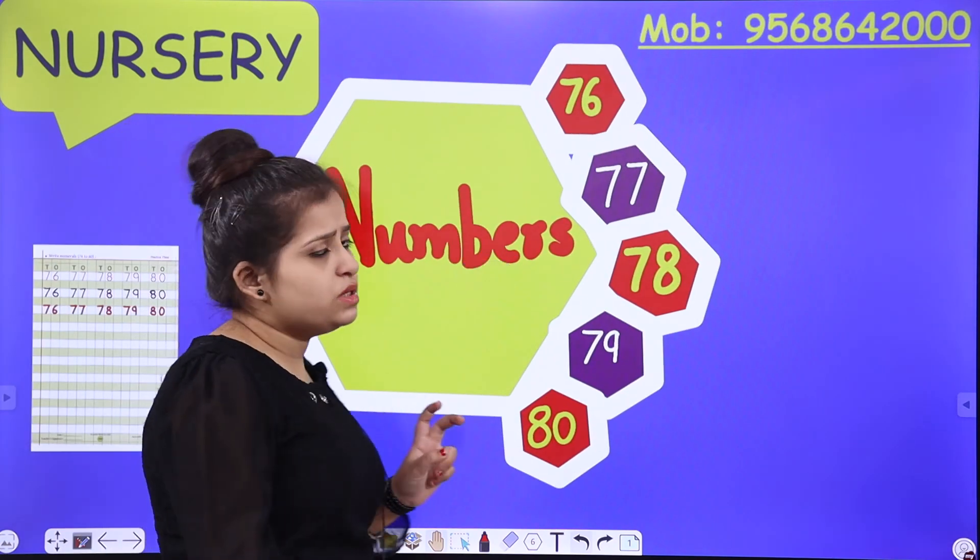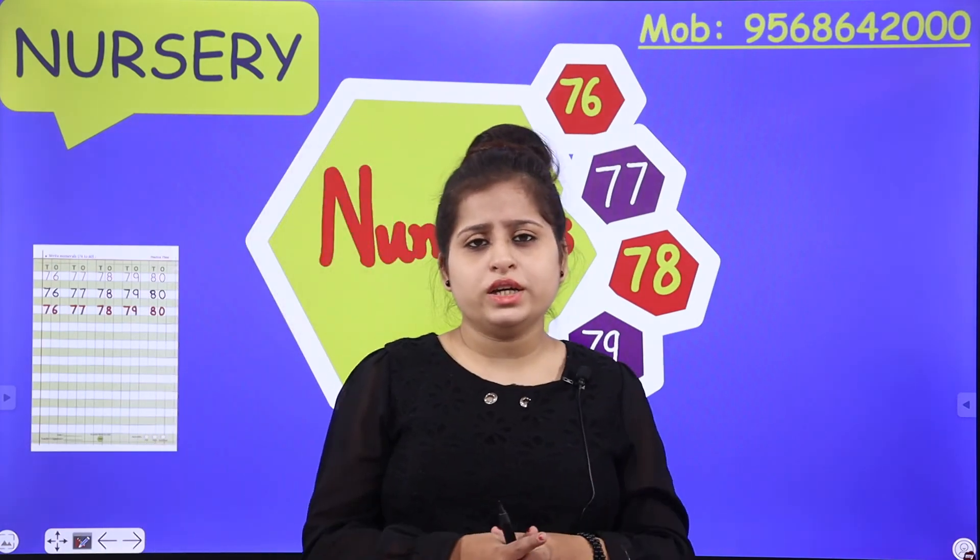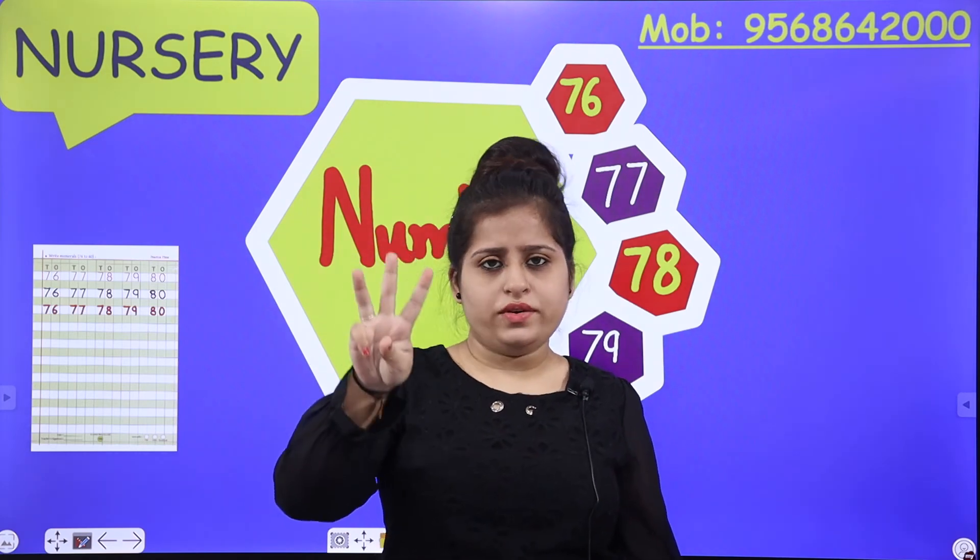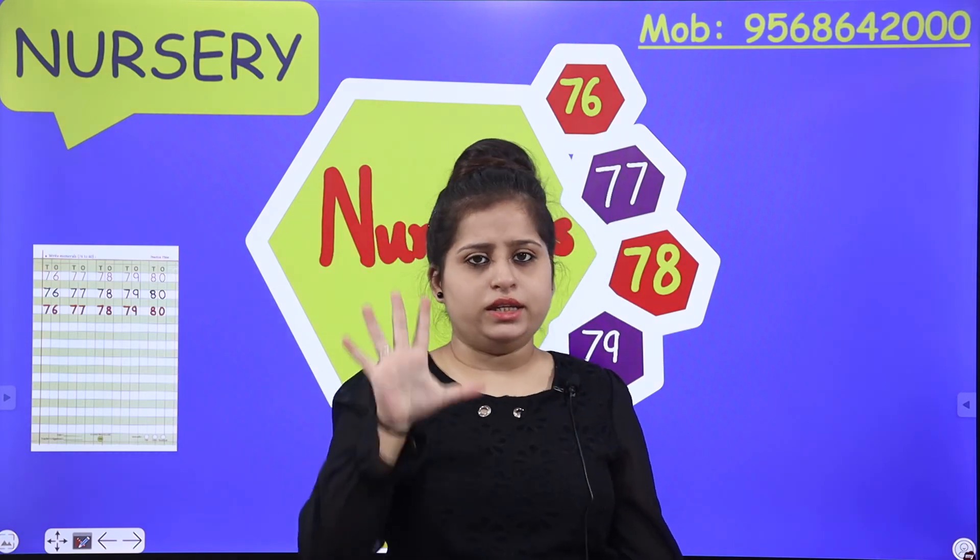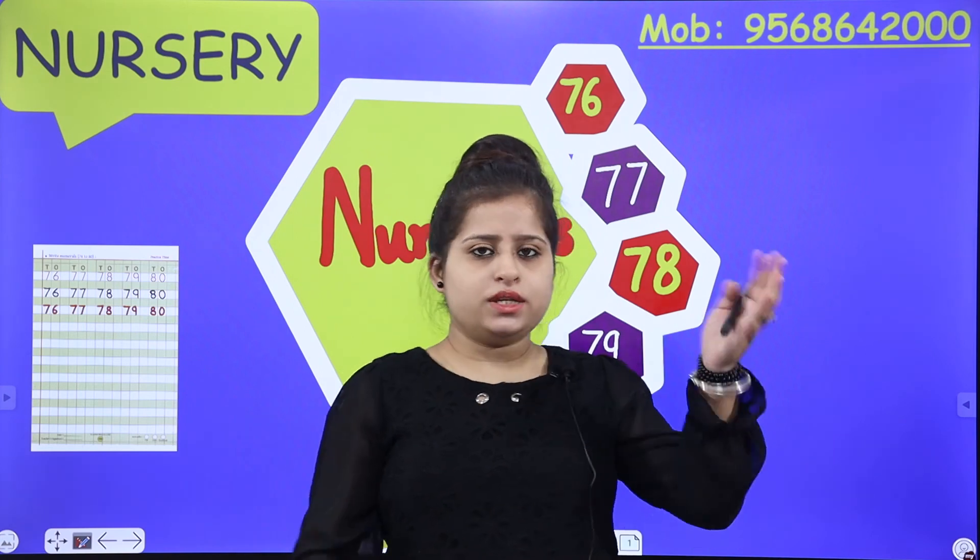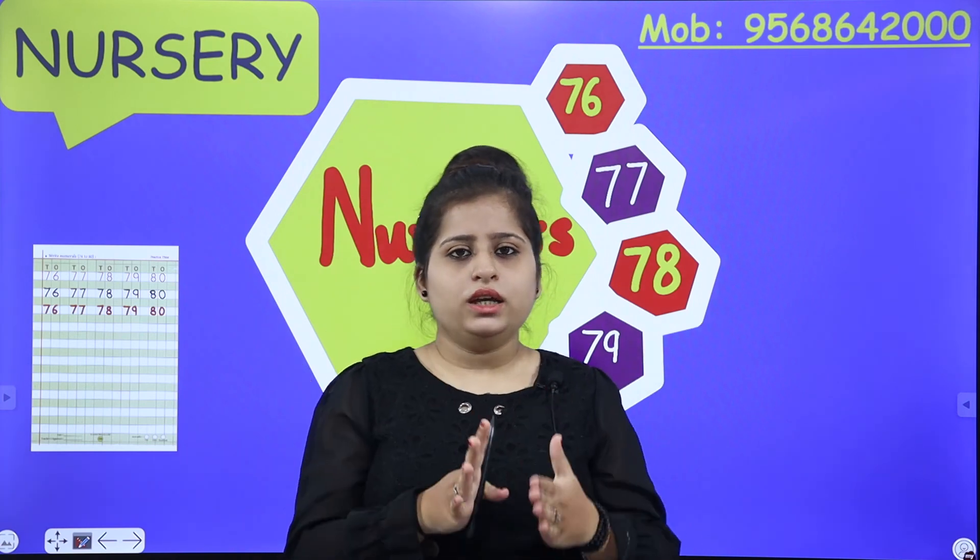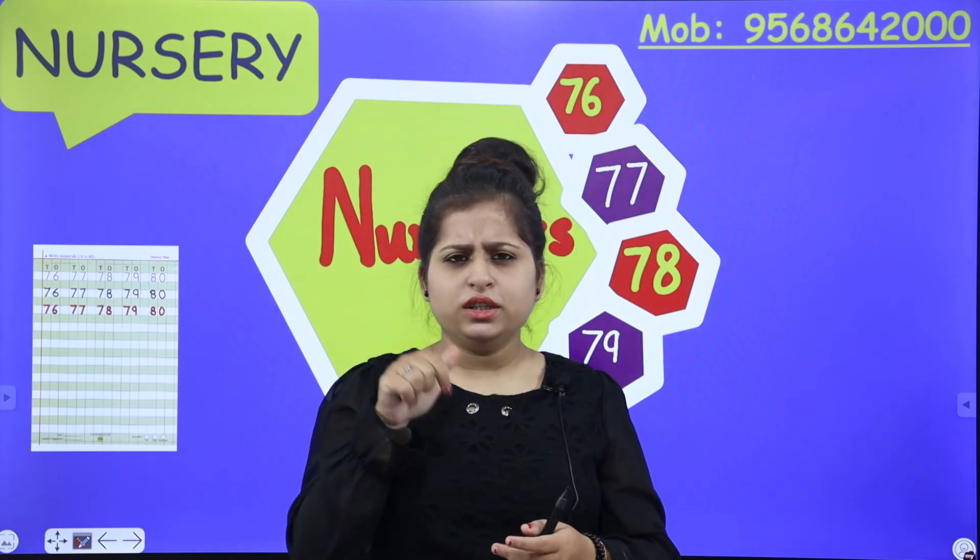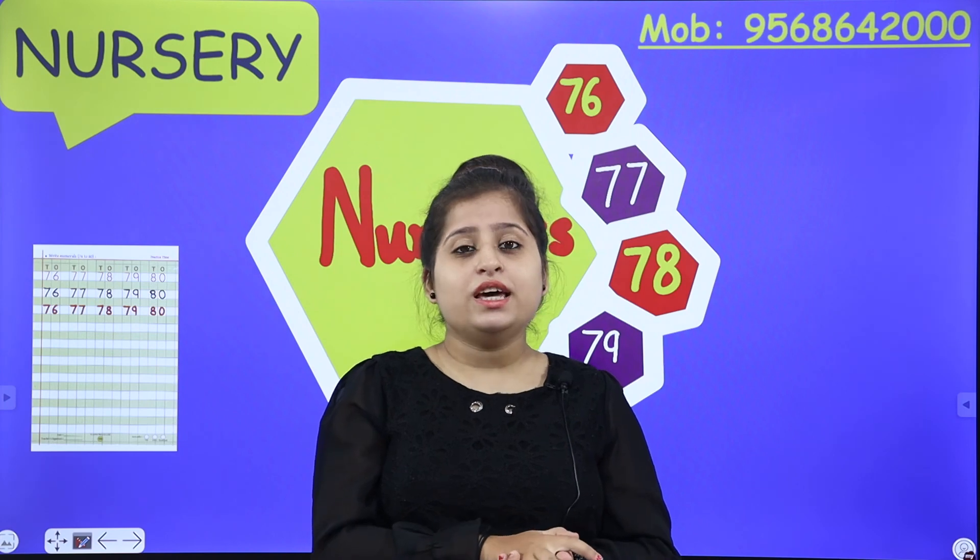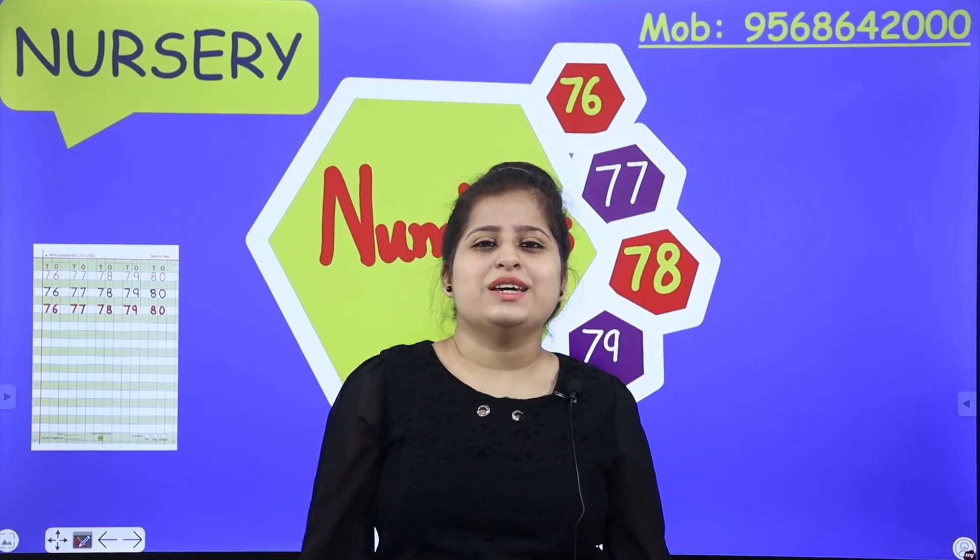Okay, so now which 5 numbers did we do today? Which 5 numbers we did? 76, 77, 78, 79, 80. Now we are completed with 71 to 80. Now we are going to do 2 parts collectively in our notebooks. But not in this class. In next class. Till then, enjoy your day. Bye bye, take care.